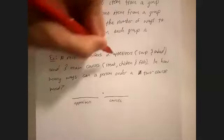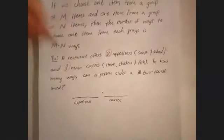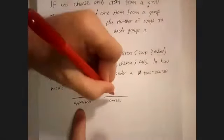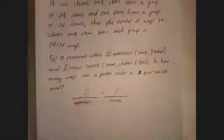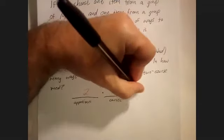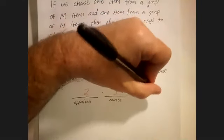Since there are two appetizers and three main courses, we've got two appetizers, three main courses, we will multiply those. And so we have six ways.